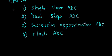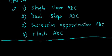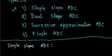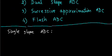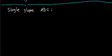We will start with understanding fundamentals of single slope ADC. This will give us basic idea about how the A to D conversion actually starts.